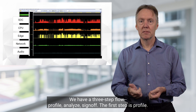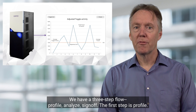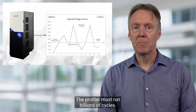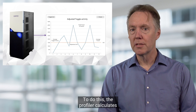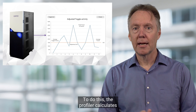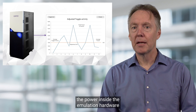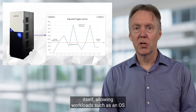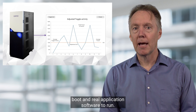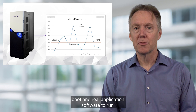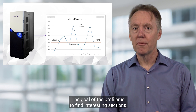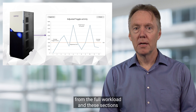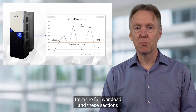We have a three-step flow: profile, analyze, and sign-off. The first step is profile. The profiler must run billions of cycles. It calculates the power inside the emulation hardware itself, allowing workloads such as an OS boot and real application software to run. The goal of the profiler is to find interesting sections from the full workload, and these sections will be millions of cycles in size.